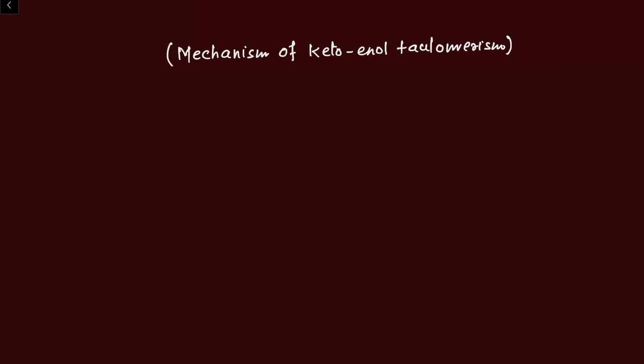Let's start to understand the first fact: why is keto-enol tautomerism catalyzed by acid and base? For understanding the first fact, let's consider a general format of a carbonyl compound with at least one alpha hydrogen atom. This is the general format of the carbonyl compound with at least one alpha hydrogen atom.